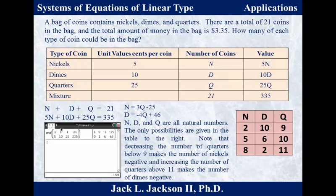Let N = nickels, D = dimes, Q = quarters. The two equations are: N + D + Q = 21, and 5N + 10D + 25Q = 335 (in cents). Using a calculator's RREF on the matrix [1, 1, 1 | 21; 5, 10, 25 | 335], the result is [1, 0, −3 | −25; 0, 1, 4 | 46]. Rewriting in terms of Q: N = 3Q − 25, and D = −4Q + 46.